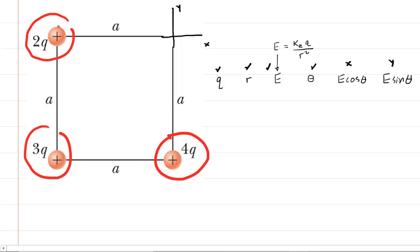The next thing we want to do is draw in the electric field. For the charge marked positive 2Q, imagine that you put a positive test charge at the location of interest. That test charge would be repelled by the positive 2Q charge, pushed away to the right — that is the direction for the electric field produced by 2Q. Similarly, the charge marked 4Q is also positive, so it would also repel the test charge upward, giving E4Q. The 3Q charge is also positive, pushing the test charge diagonally, giving E3Q.